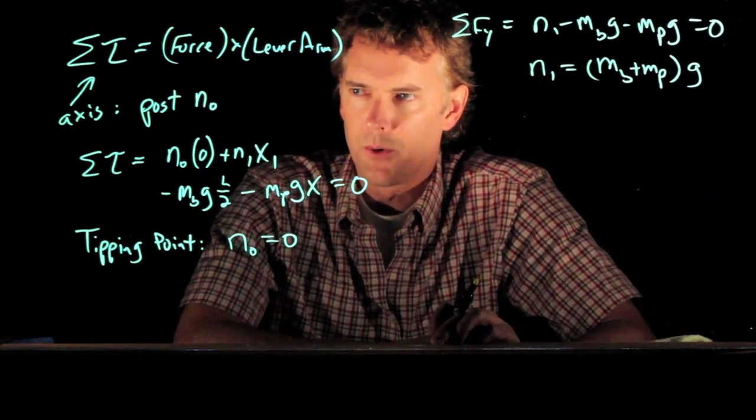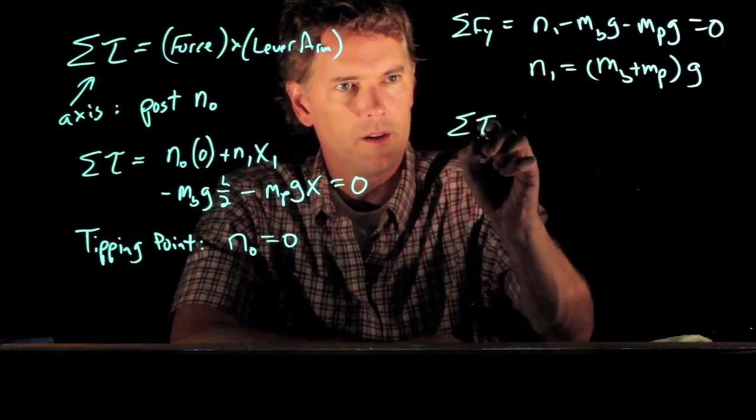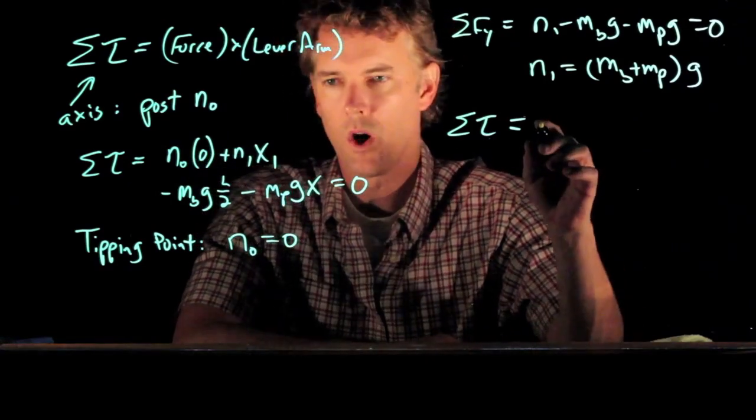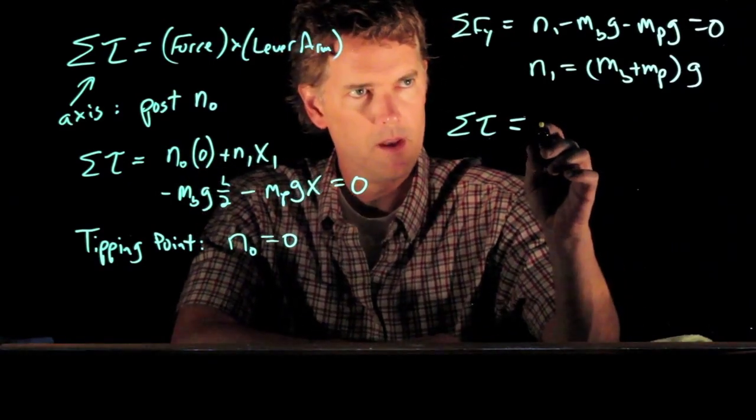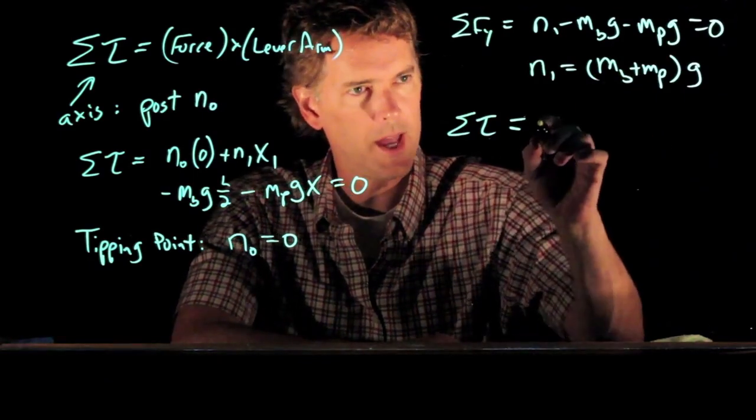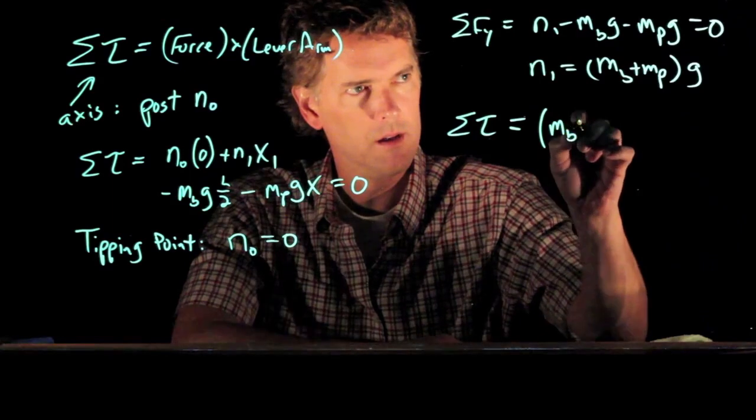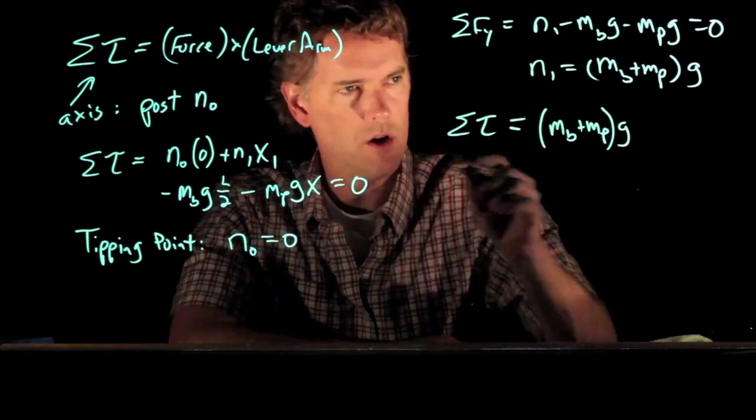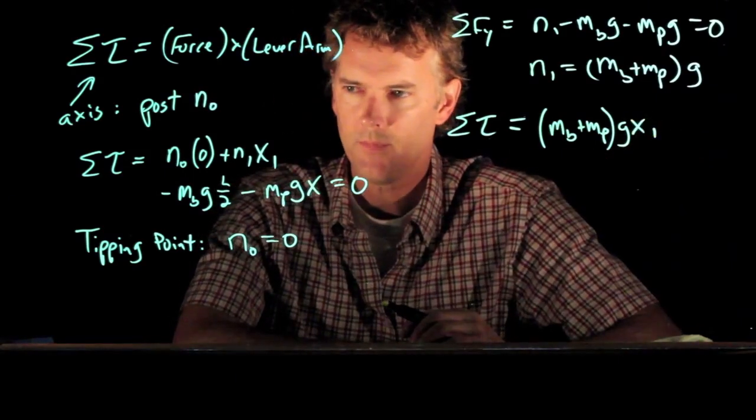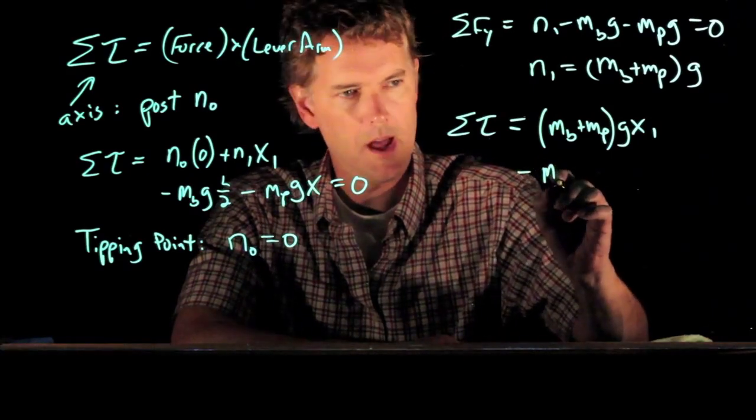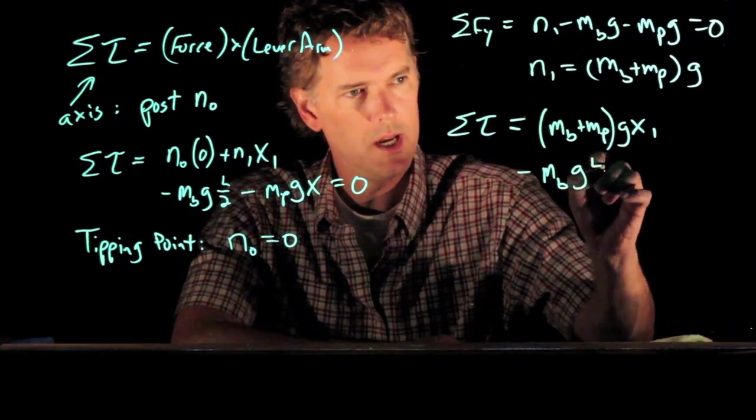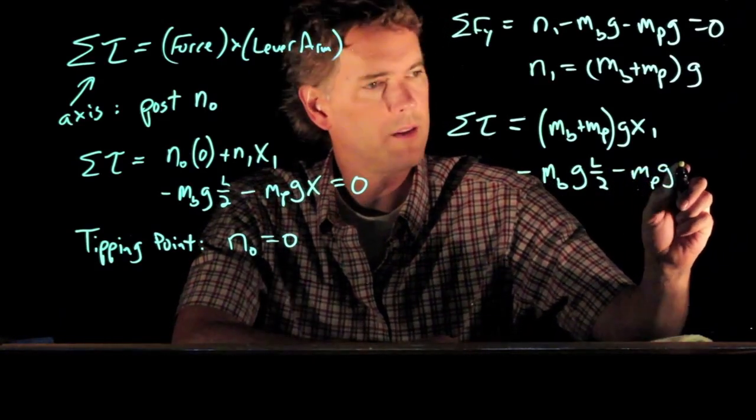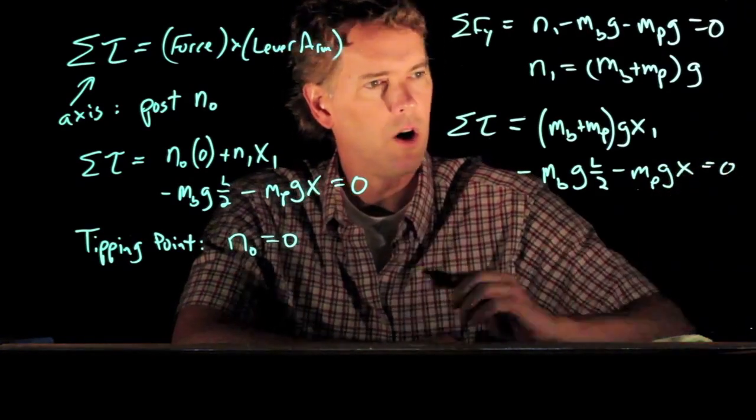And now let's go back to our torque equation. So torque was n0 was multiplying zero. That one's gone. We have n1 times x1. But n1 is now this. So we have mb plus mp times g all times x1. Then we have minus mb plus g L over 2, and minus mpg times x. All of that equals zero. And now we can solve this equation for x.